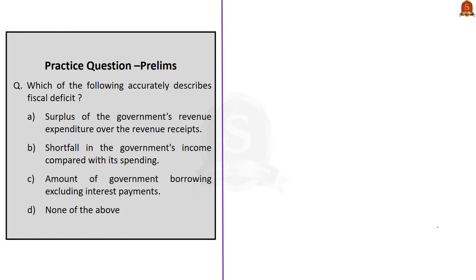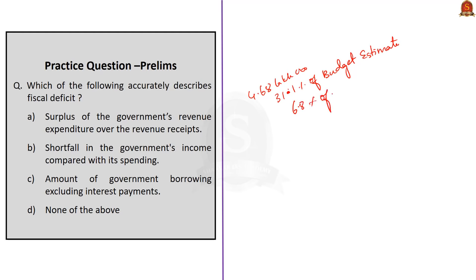Coming to the news article: it reports that the fiscal deficit of the government stood at 4.68 lakh crore rupees at the end of August, which is about 31.1% of budget estimates. For the current financial year, the government expects the deficit at 6.8% of GDP. We saw what fiscal deficit is, how it is calculated, and in what cases it can occur.